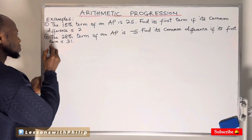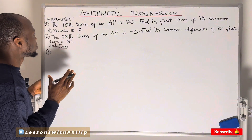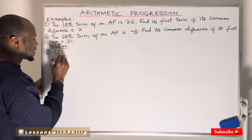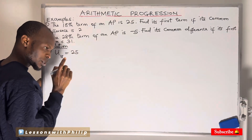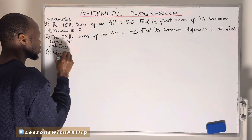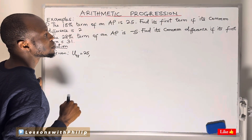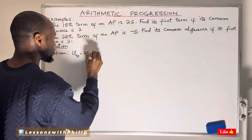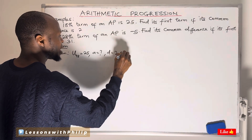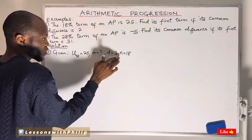Okay, number one — the first example. The question says the 18th term of an AP is 25. Automatically I know that my u18, the 18th term, is 25. Let me write what we're given from the question: u18 = 25, that shows that my 18th term is 25. I'm asked to find the first term. The common difference is 2, and my n would be 18 because I'm told the term has 18.